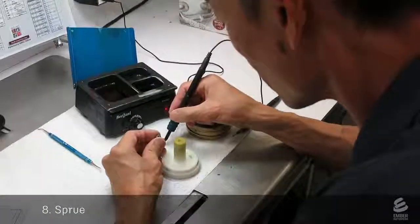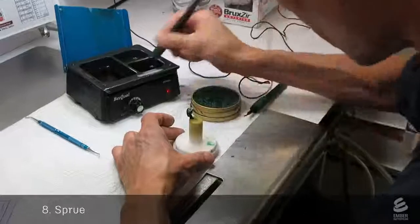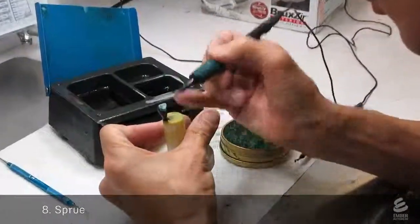Another technician sprues the crown. They use wax to attach it to a stem. This will create a passage for metal to flow into the crown during the casting process.